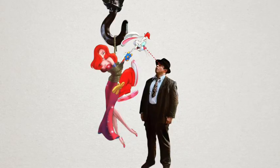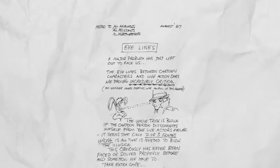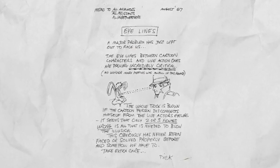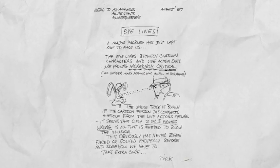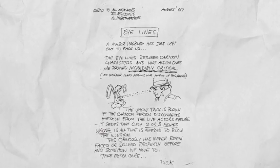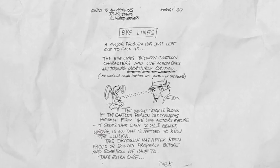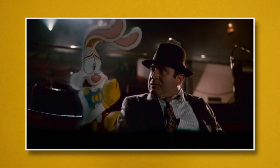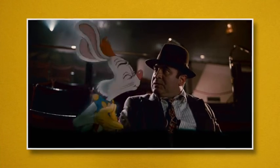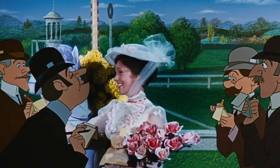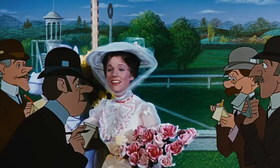Eyeline is important for a number of reasons. It establishes an emotional connection between the animated character and the actor, it sets a blocking reference for the animators, and it also convinces the audience that both characters are occupying the same dimensional space. And when the effect works, it's a seamless interaction, but when it doesn't, the actors seem to be blankly staring at dead space.